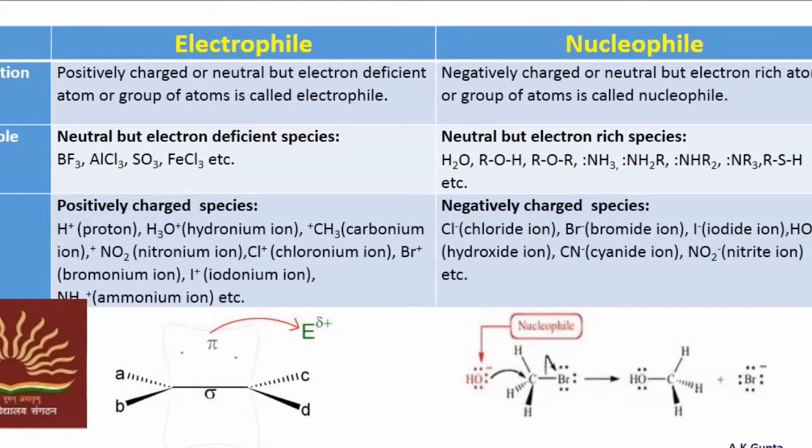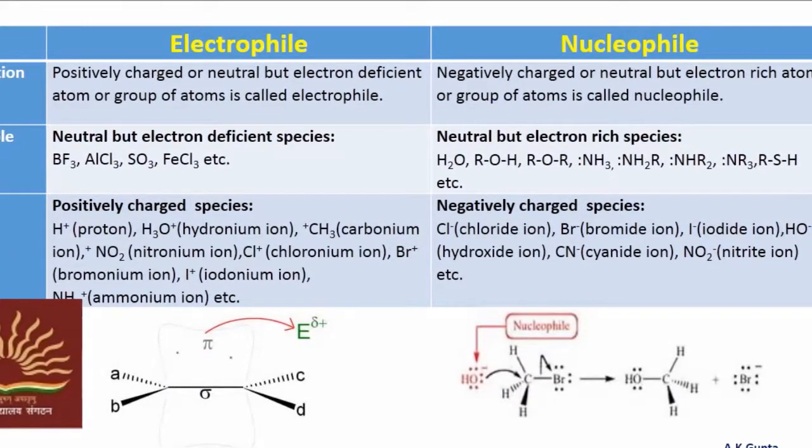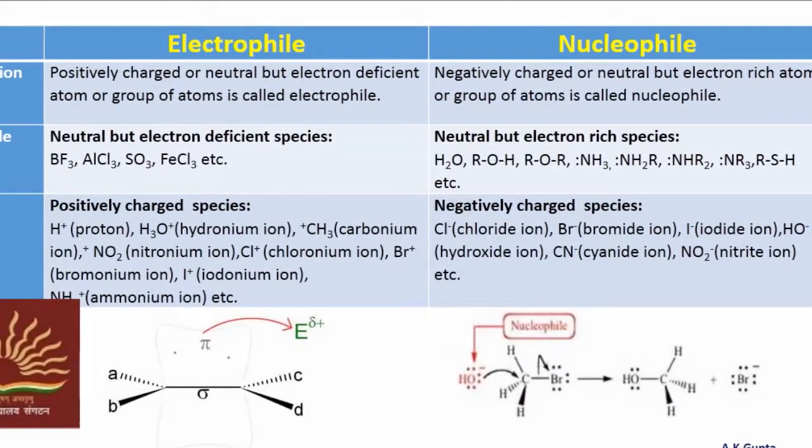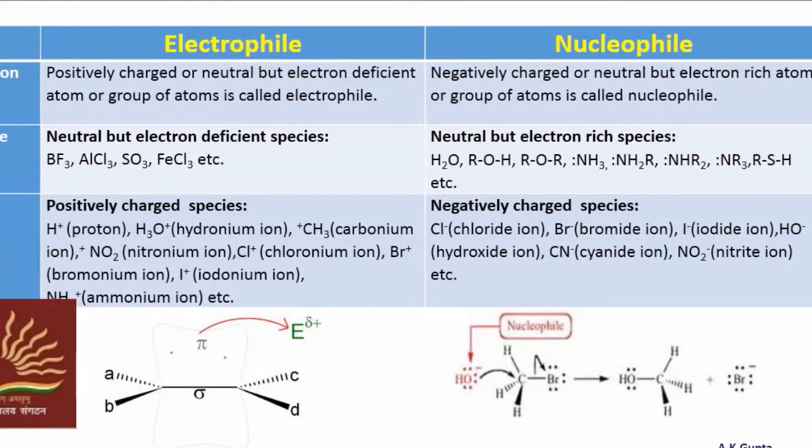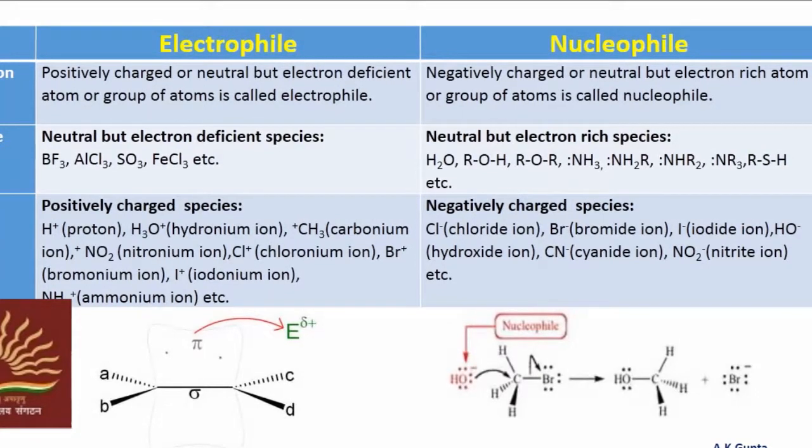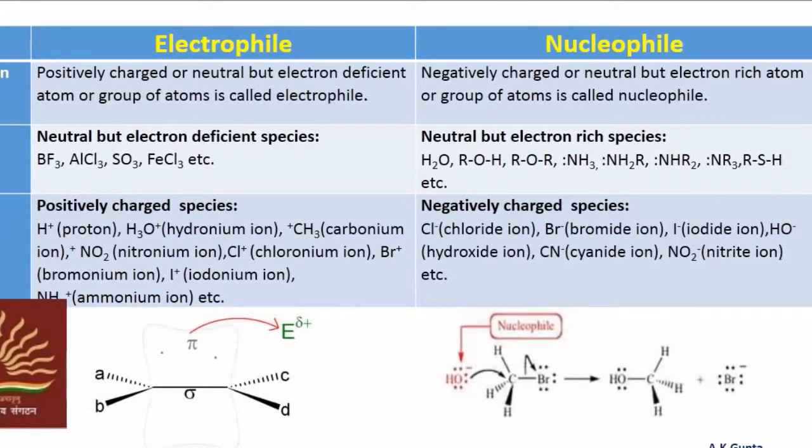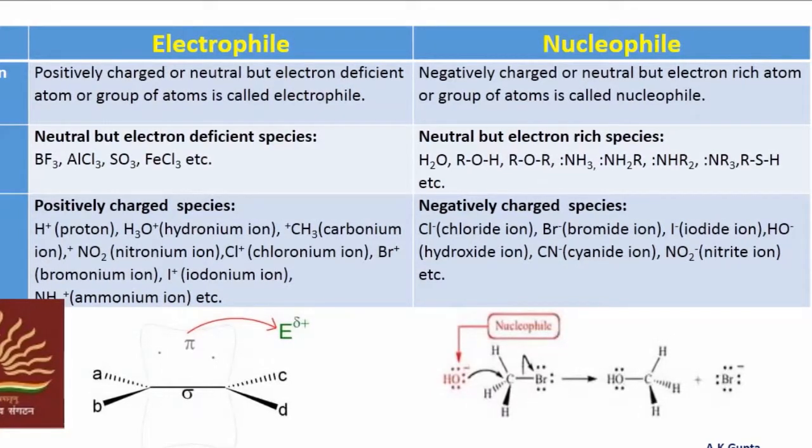The positively charged species will also act as electrophiles. For example, proton, hydronium ion, carbonium ion, nitronium ion, chloronium ion, bromonium ion, iodonium ion, and ammonium ion. They are electron deficient and therefore they act as electrophiles.